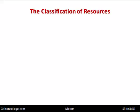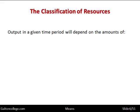Now let's look at the classification of resources. Output in a given time period will depend on the amount of labour — that's one key resource that's required. Everything happens through labour. Labour builds the factories, labour builds the roads, labour builds the goods and services that we want. Someone has to produce it, and that's the labour force. So when we classify resources, the first one we encounter would be labour.